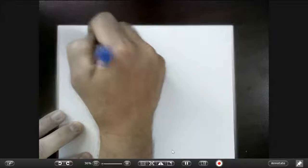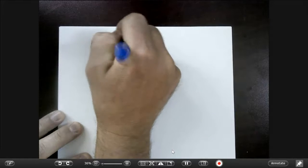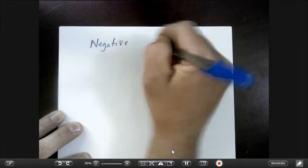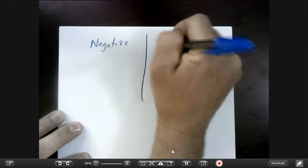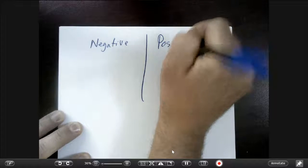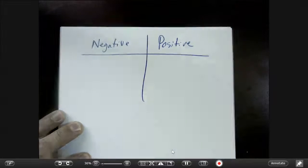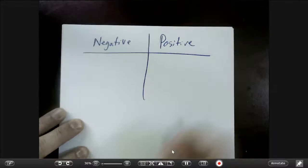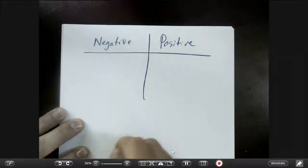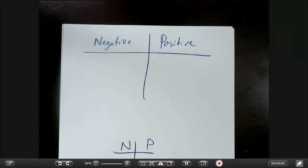NP chart stands for negative and positive. Most of the time we won't write negative and positive out, we'll just do NP on the top.